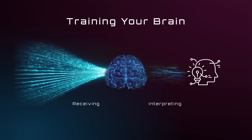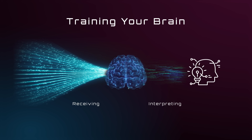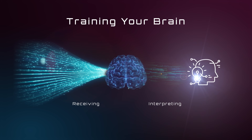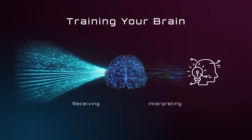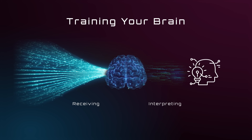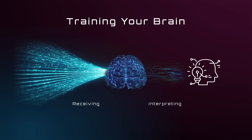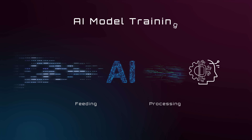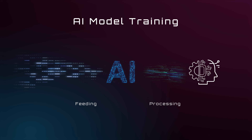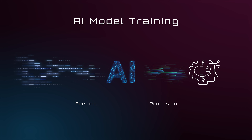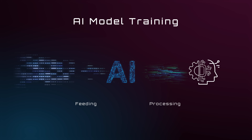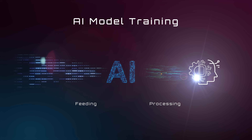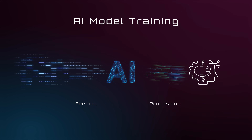As you grow up, your brain receives more and more information, and thus becomes smarter in making accurate interpretations and responses. This progress is basically training your brain. And when it comes to AI model training, it means feeding massive amounts of data to a certain AI model to process, and examining how it becomes smarter.